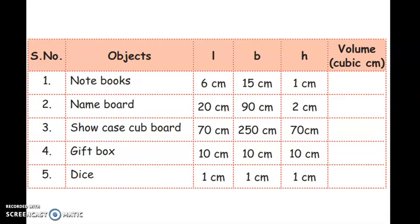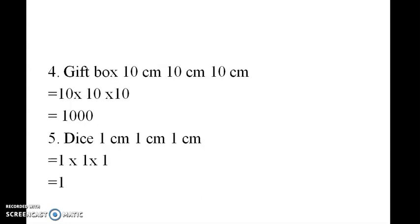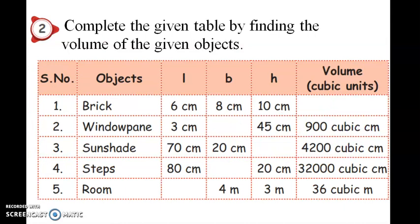We do multiplication: 6 into 15 into 1. Notebook is 6 centimeter, 15 centimeter, 1 centimeter — so 6 into 15 into 1 is 90. Name board: 20 into 19 into 2 is 3600. Gift box answer is 12,25,000. Dice answer: notebook 90, name board 360. So this is the answer.